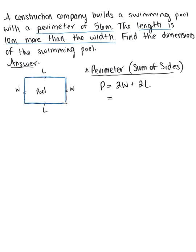We can simplify this by factoring out the two: P = 2(W + L).